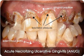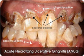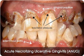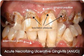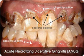Acute necrotizing ulcerative gingivitis is a specific gum disease affecting mainly the interdental papillae and gum margin. It affects usually healthy young adults with poor oral hygiene.